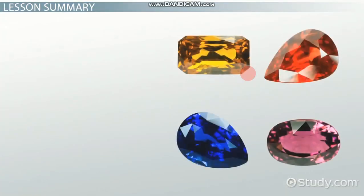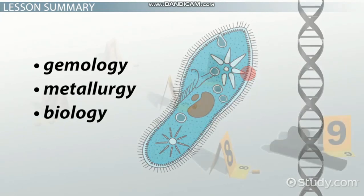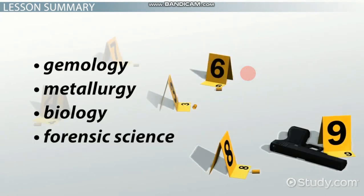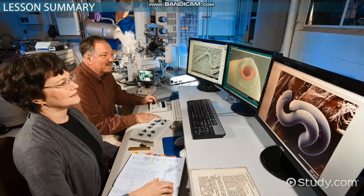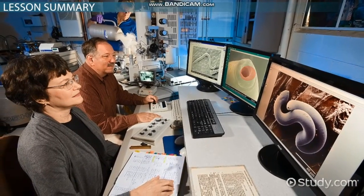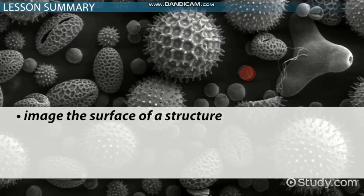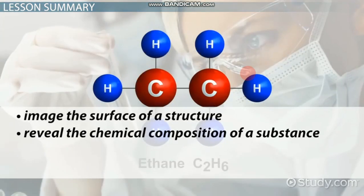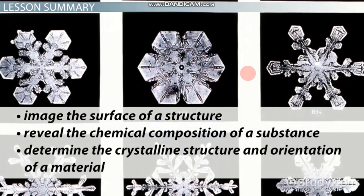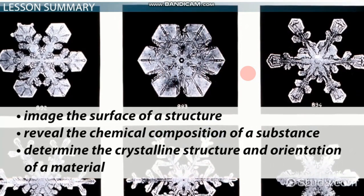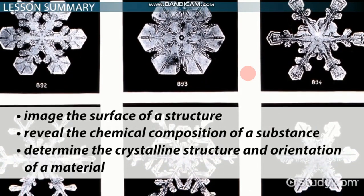People in the fields of gemology, metallurgy, biology, and forensic science use scanning electron microscopy for various things, like to image the surface of a structure, to help reveal the chemical composition of a substance, and to determine the crystalline structure and orientation of a material.